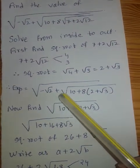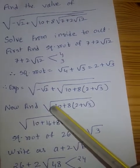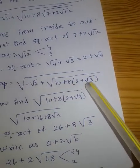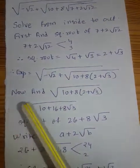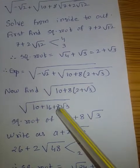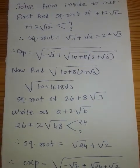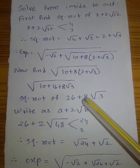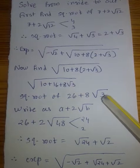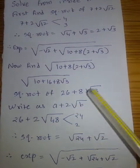The expression now becomes this. I will multiply it by 8. Solving inside to out: 10 plus 8 × 2 = 16, so 16 + 8√3 = 26 + 8√3. We need to find the square root of this. Write it in the form a + 2√b: bring 4 out so 8√3 becomes 2√(16 × 3) = 2√48. The expression is now 26 + 2√48. Since 24 × 2 = 48 and 24 + 2 = 26, the square root is √24 + √2.